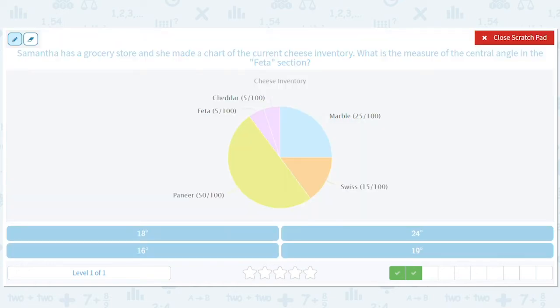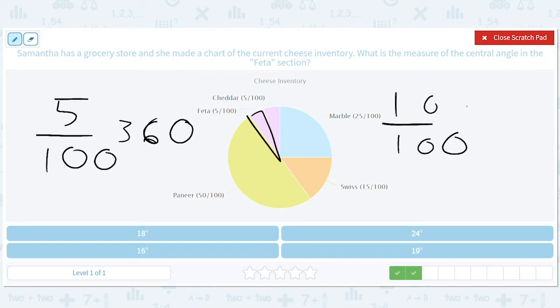Ooh, I hope we get Paneer. Nope, we get Feta. That's okay, Feta's good. Feta's five out of 100, that's a good number. Five out of 100 times 360. So same idea. If we did 10 out of 100, it's a good trick, that's 10%, so that would be just 36. So 5 out of 100 is half that, which is 18. So it's 18 degrees.